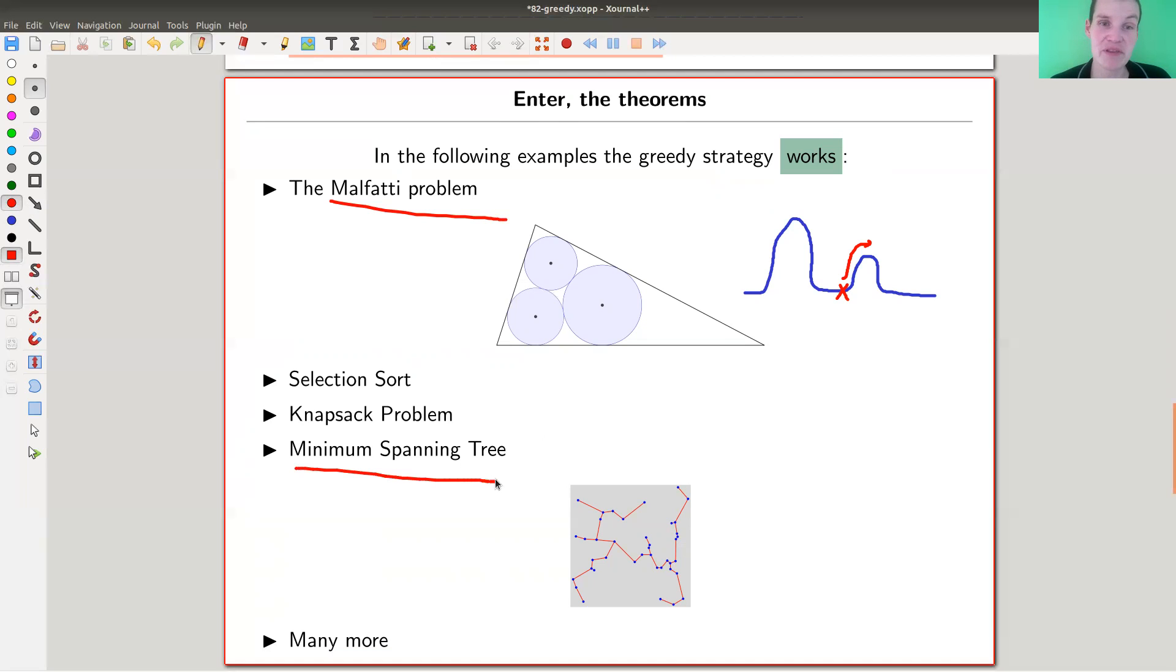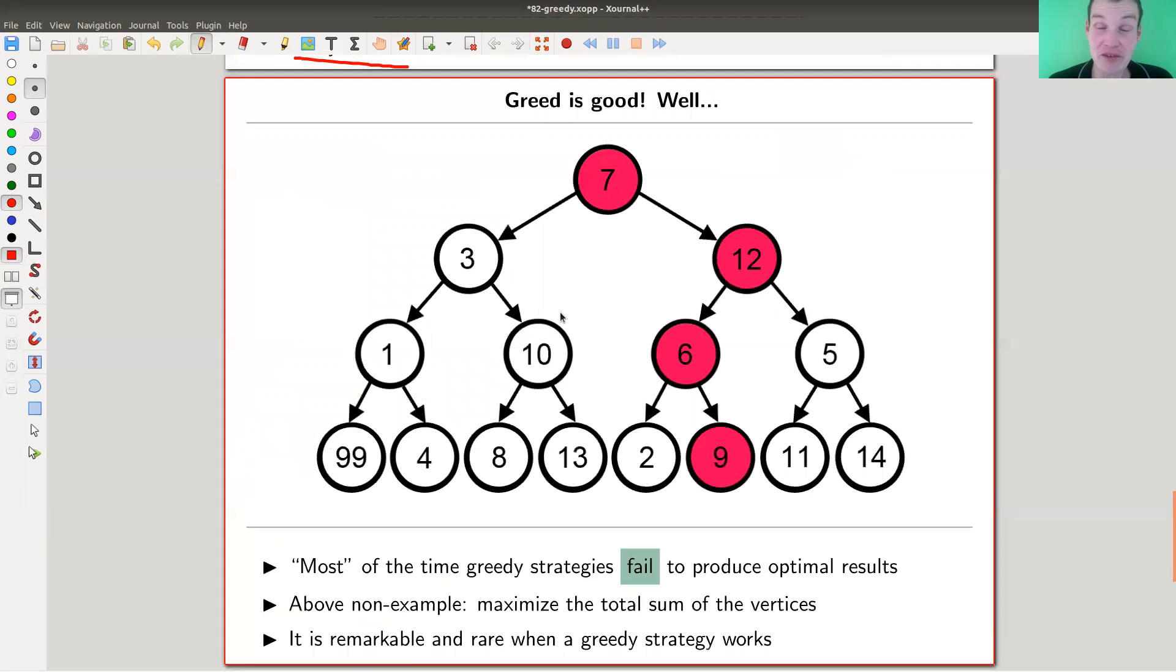For example, minimal spanning trees, a lot of problems in graph theory, which I'm not going to go into and many, many more. So whenever you see a greedy solution to a problem, this is remarkable and something is going on here, because there's really no a priori good reason why doing locally the optimum should give globally the best solution. And this can be really horribly wrong. So my brain should be warned here, actually. So the greedy algorithm strategy usually fails completely. And as I said, it's then remarkable and rare when the strategy works.